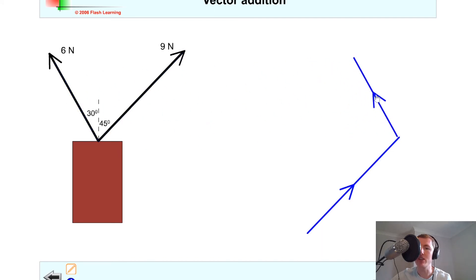You'll notice that the nose of this vector is added to the tail of this vector. So then all I need to do for the resultant vector is draw a line from the start to the finish point. That's the shortest distance from the start to the finish point, which is this vector here. And you'll notice there are two arrows on it to show that it's a resultant vector.